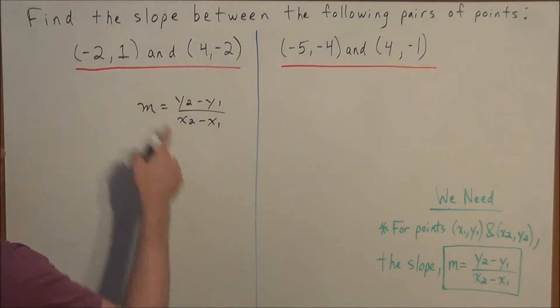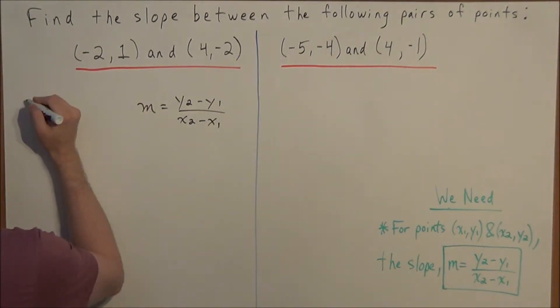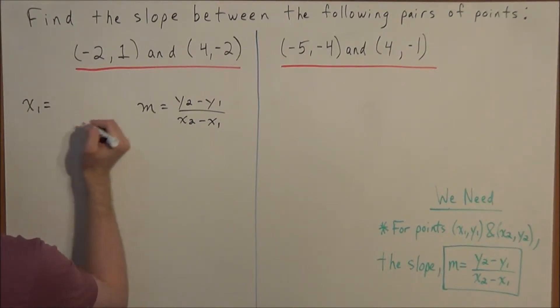So if we say negative two, one is x1, y1, then that means we have an x1 value. We look at the x coordinate of this point and we have an x coordinate of negative two. So we have x1 is equal to negative two, y1 is equal to positive one.